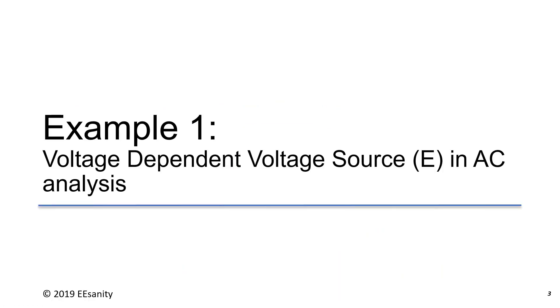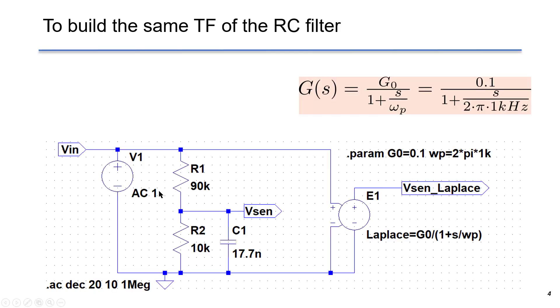This is our first example. We are going to use a voltage-dependent voltage source in AC analysis using the same example as shown before. This is the same example of low-pass filter. We have R1, R2, and C1 as design parameters. We got AC source here as input.